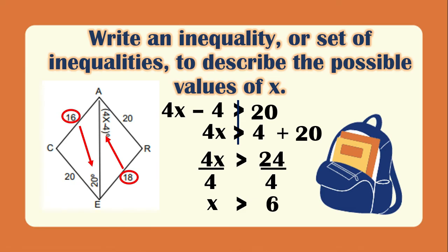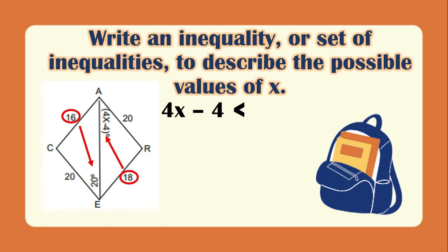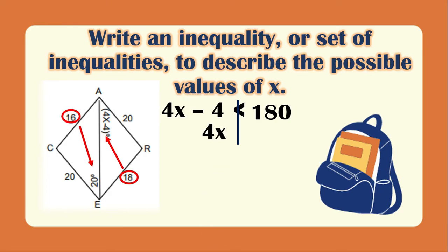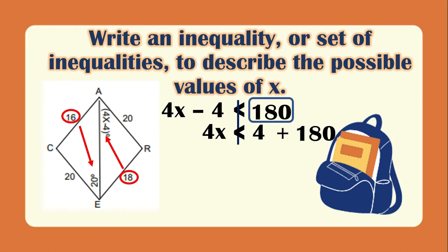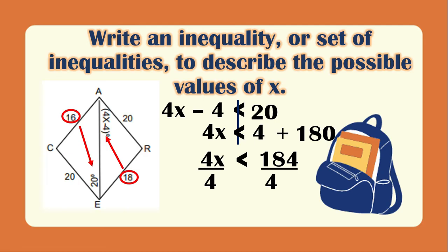For the maximum value, 4x minus 4 must be less than 180 degrees since it cannot exceed the total angle of a triangle. Transposing: 4x is less than 184. Dividing both sides by 4, x is less than 46. So the values of x must be greater than 6 but less than 46.